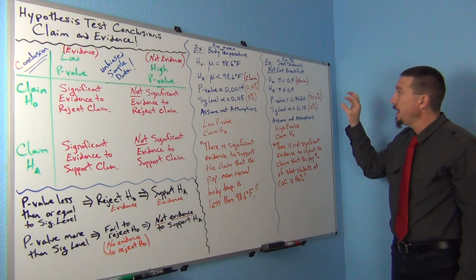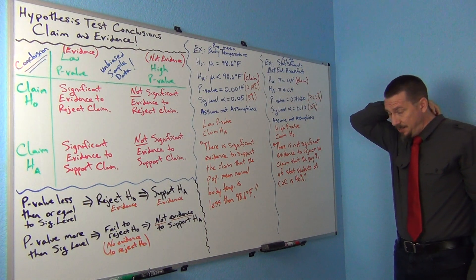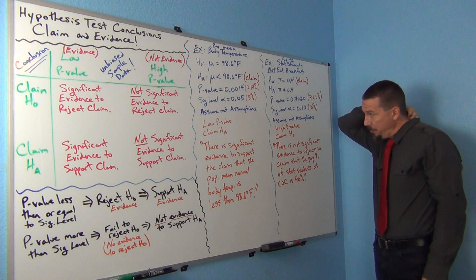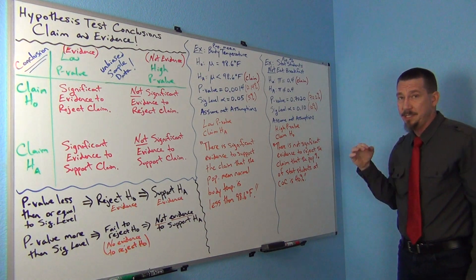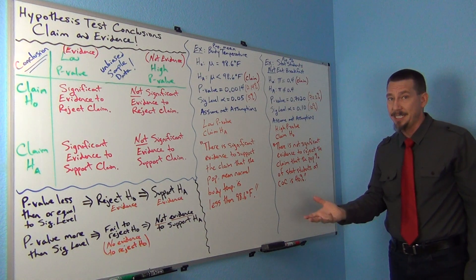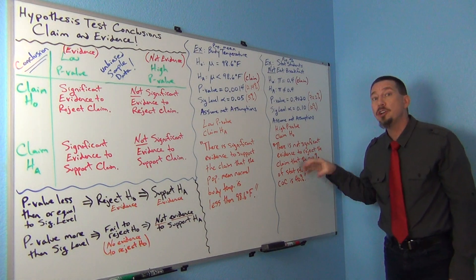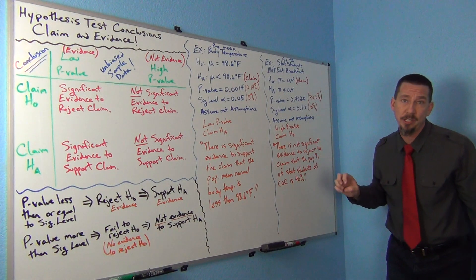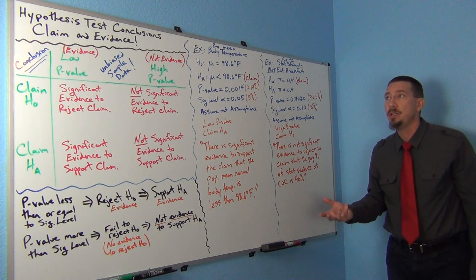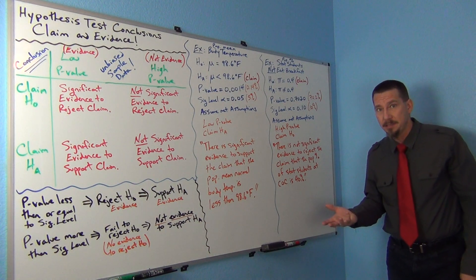Now, this is not proving that it is 40%. This is not saying that we know it's 40%. What it means is we do not have evidence to reject it. Again, that would mean it could be true. Think of this one as a not reject situation. It could be true, but I really don't have evidence.